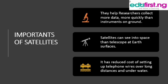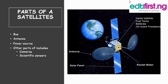What are the parts of a satellite? We have the bus, the antenna, and the power source as the main parts. Other parts include the camera and scientific sensors. The antenna receives and transmits information and cuts signals. The power source is usually a solar panel that provides power for the satellite to work. Cameras take pictures and send signals to the Earth, and scientific sensors and other attachments serve different purposes.